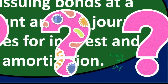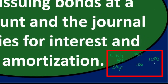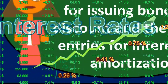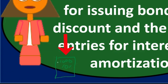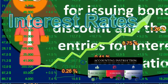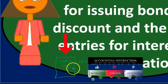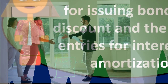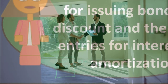Why does this discount exist? Why would we promise to pay back one thousand but receive less for the bond? The discount comes from the difference between interest rates — the market rate and the stated rate. The stated rate is fixed on the bond and can't be changed. What can change is how much people pay for the bond. If the market rate is twelve percent and our bond only pays ten percent, investors won't pay a thousand dollars for our bond because they could get a better return elsewhere.